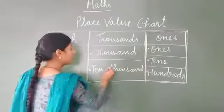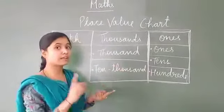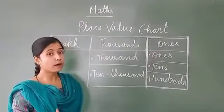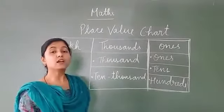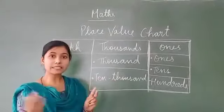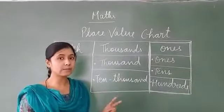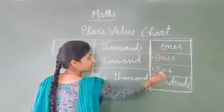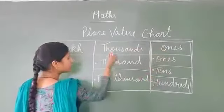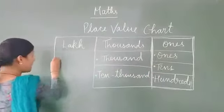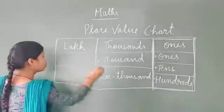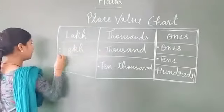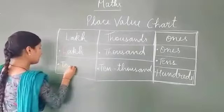As you may see in your own family — your chachu, your buddy papa, your uncle, your father — they are brothers, they are siblings. Like that, ones has three children, thousands has two children, and lakh also has two children: lakh and ten lakh.